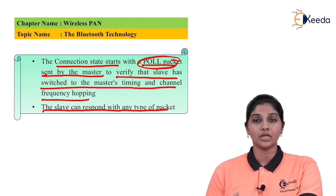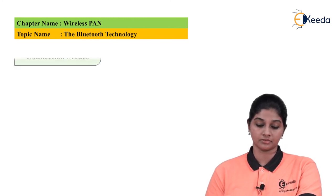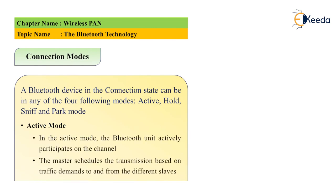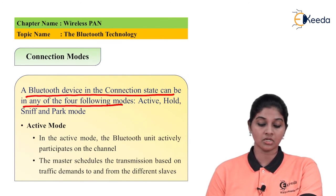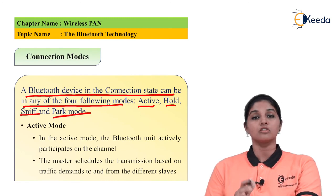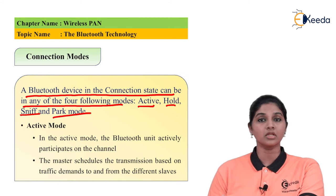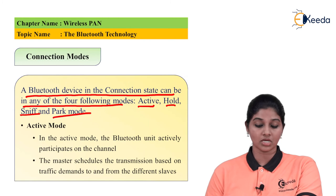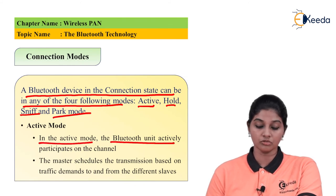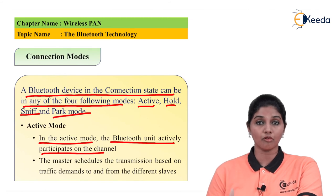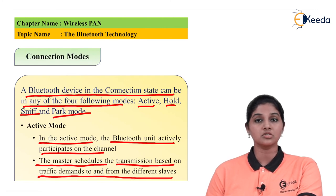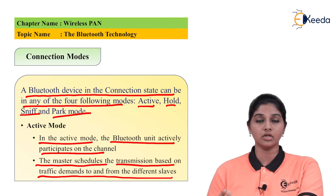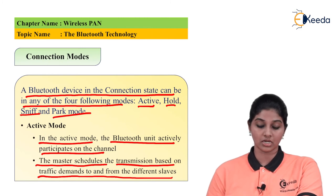After establishing a connection, the Bluetooth device can be in one of four connection modes: active, hold, sniff, or park. In active mode, the Bluetooth unit actively participates on the channel. The master schedules transmission based on traffic demands to or from different slaves. Active slaves listen to the master-to-slave slot for packets; if an active slave is not addressed, it may sleep until the next master transmission.